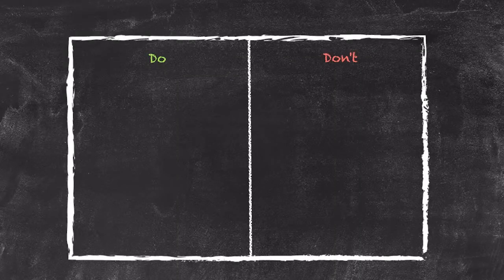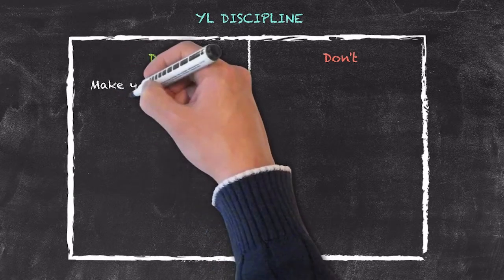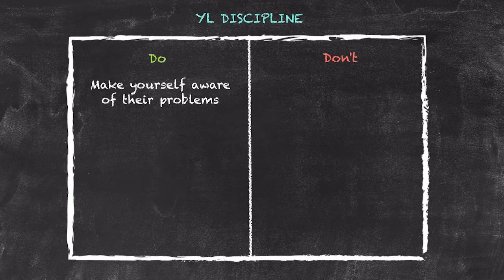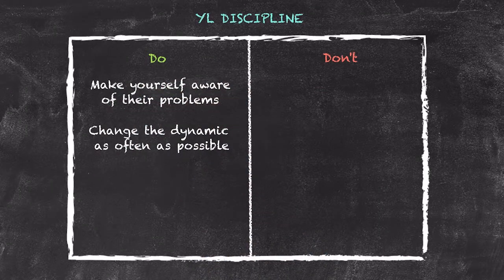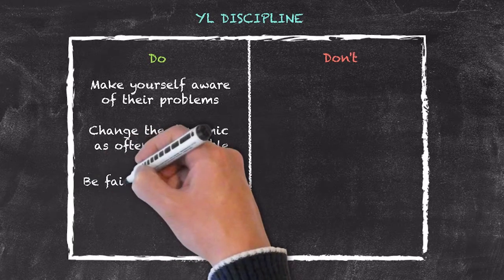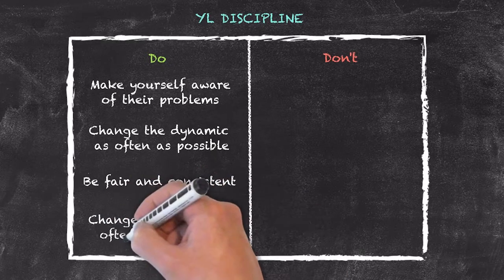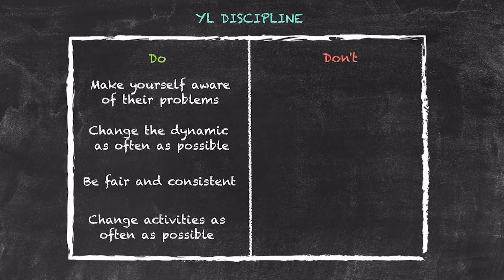On discipline with young learners: be aware of any problems they have in school or outside, as these can affect how they learn. Change the classroom dynamic as often as possible — seating arrangements, pair work partners, and group compositions. Always be fair and consistent with your classroom rules. Change activities as often as possible to keep students motivated and fresh throughout lessons.